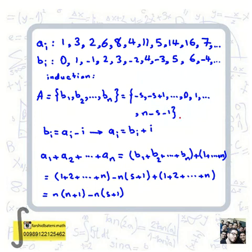The positive integers among b1 to bn are 1, 2, ..., n-s-1, and we have n elements in total. Now writing b_i = a_i - i, we conclude a_i = b_i + i. So we can express the sum a1 + a2 + ... + an as (b1 + b2 + ... + bn) + (1 + 2 + ... + n).